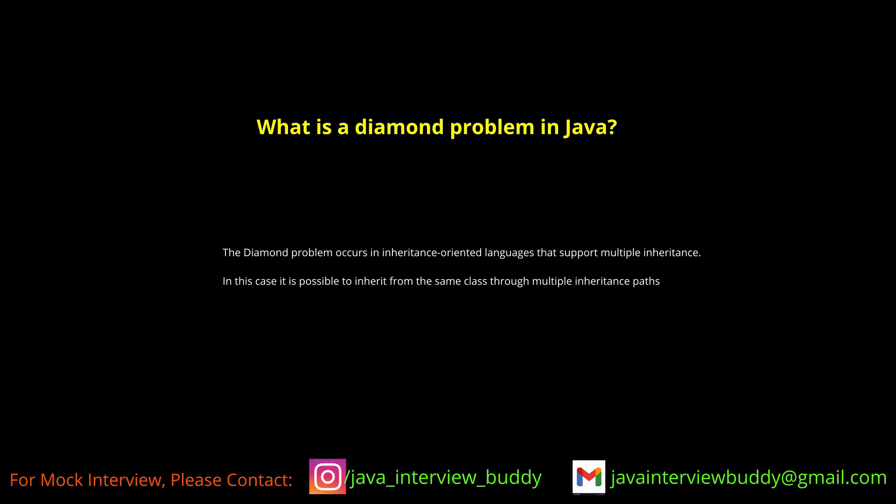What is a diamond problem in Java in the context of inheritance? Multiple inheritance in classes is referred to as a diamond problem because a single class extends multiple classes. There may be a situation where both classes have the same method, so if we extend both classes with the same method, ambiguity error will come when we are trying to call that method.